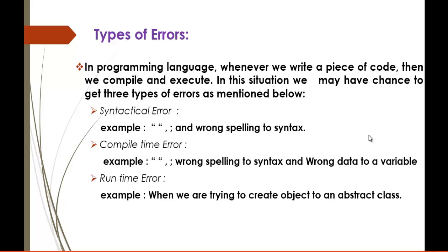In programming, whenever we write a piece of code then we compile and execute. In this situation we may have a chance to get three types of errors. The three types of errors include syntactical error, compile time error, and runtime error. Syntactical error means the missing of double quotes, line terminator, or wrong spelling to the syntax. Compile time error includes the same things like missing double quotes, line terminator, or assigning wrong data to a variable.